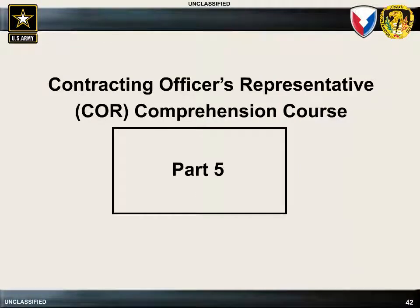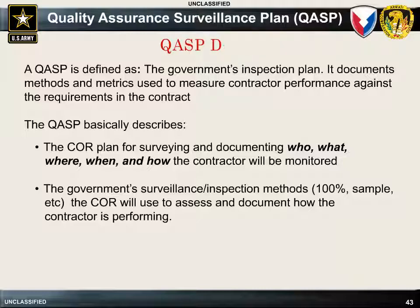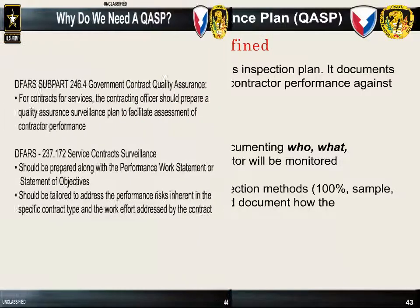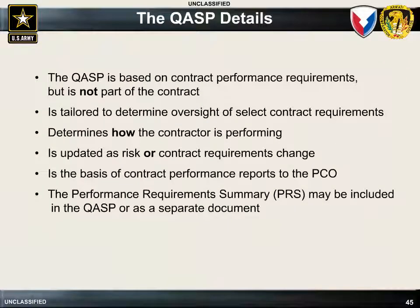Welcome to Part 5 of the Army Contracting Command's Contracting Officer Representative Comprehension Training. The Quality Assurance Surveillance Plan, or QASP, is the government's inspection plan. It documents the methods and metrics used to measure contractor performance against the requirements of the contract. The QASP also describes the COR's plan for surveying and documenting who, what, when, where, and how the contractor will be monitored. The use of a QASP is mandated by the DFARS, which states that a QASP will be developed and used by the COR on all service contracts and that it should address performance risks inherent in the individual contract. The QASP is based on performance requirements of the contract but is not considered part of the contract. The QASP should be updated as contract risk or requirements change, and should also be used as the basis for monthly status reports submitted to the PCO.